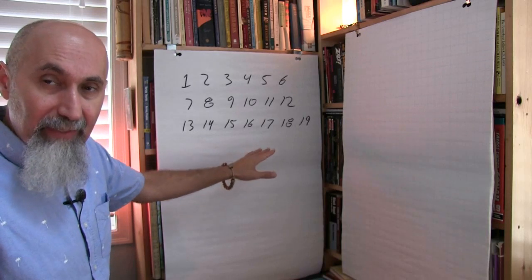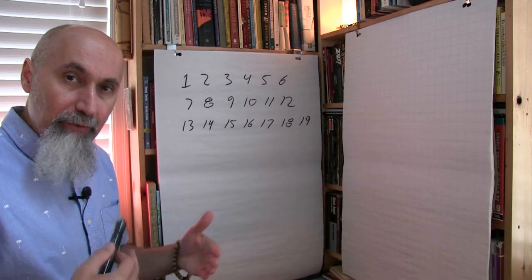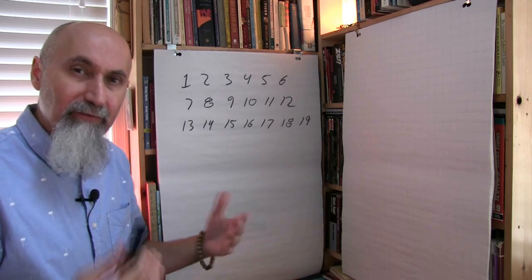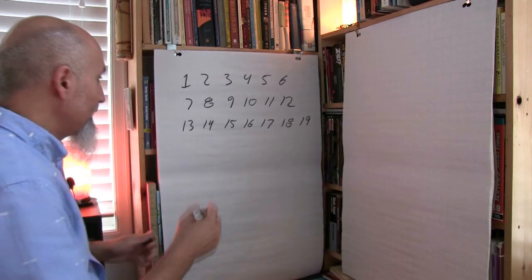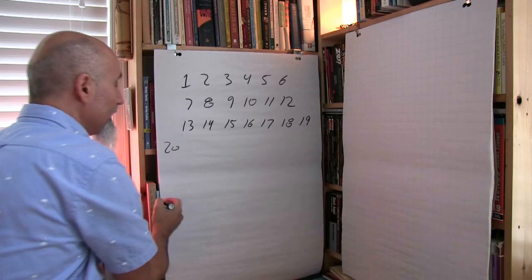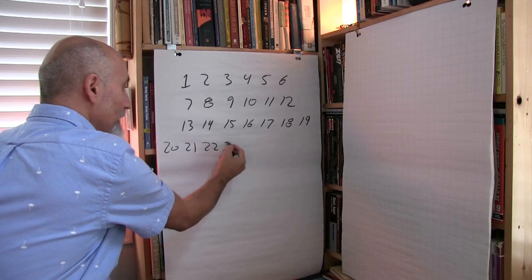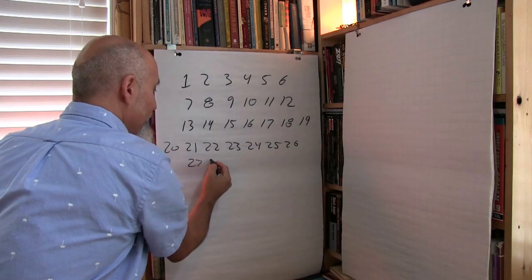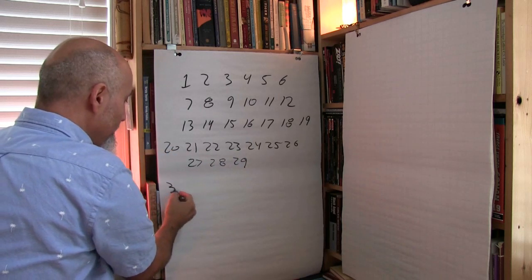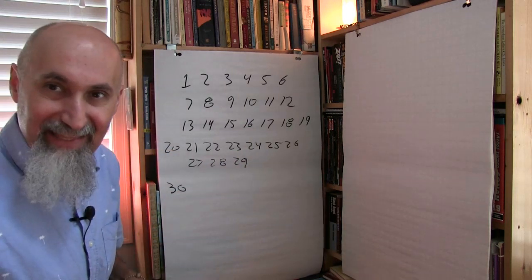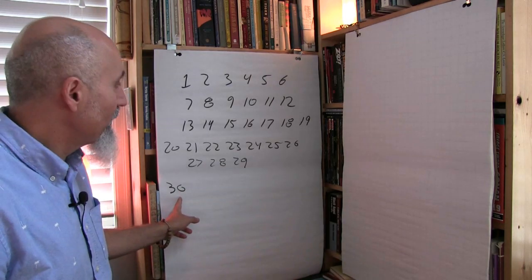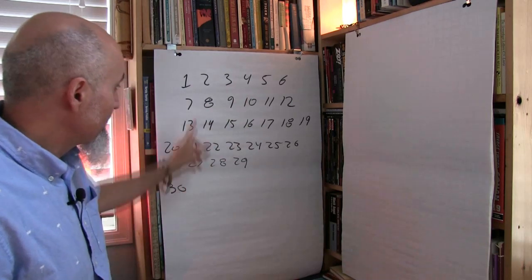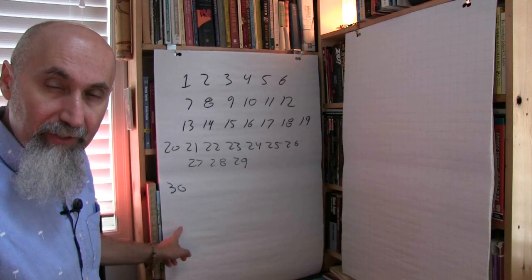From 19, a pattern emerges that basically sticks all the way up to infinity. From 19 you go to 20, then 21, 22, 23, 24, 25, 26, 27, 28, 29, and then you're back to the next tens. 30 starts off the same way — 31, 32, 33, 34, 35, 36, 37, 38, 39, and then you're into the 40s.